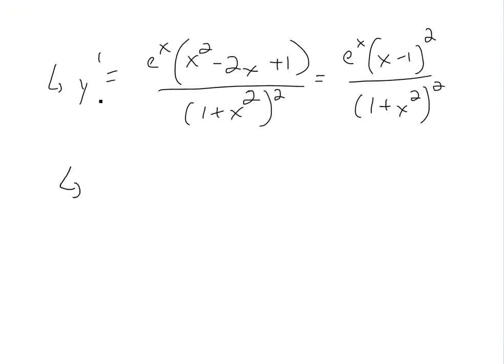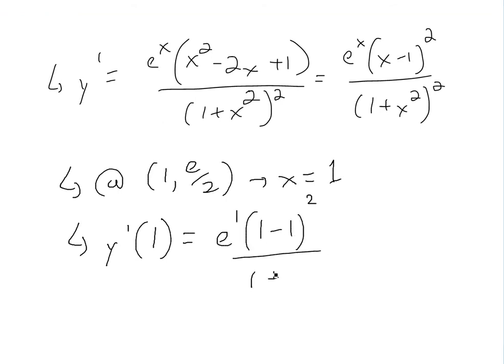So now, we have to find out what the derivative is at basically (1, e/2), or in this case, x equals 1 right here. So we just plug in x equals 1 into this. So we get y prime at x equals 1 is equal to e to the 1 times (1 minus 1) squared, divided by (1 plus 1) squared. So the bottom is going to be 2 squared, 4, but then you have a 0 right here.